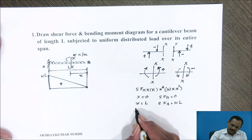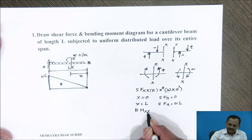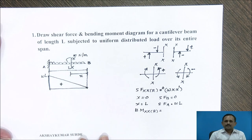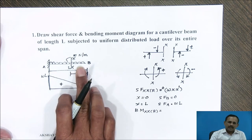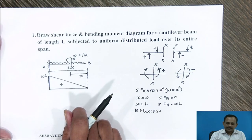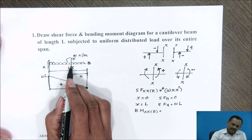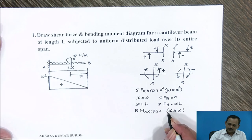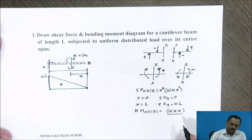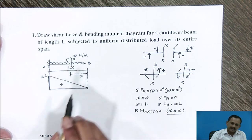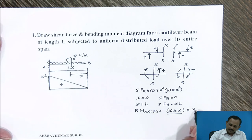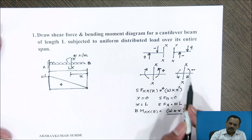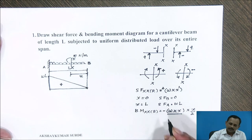For bending moment calculation, bending moment at section XX referring the right side of the section. Bending moment is the resultant of the moment due to the forces and reaction acting to the right side of the section. The total force acting to the right side of the section is rate of load W spread over distance X. This total load acts as a point load from section XX at a distance X by 2. The moment to the right side of the section acts in the clockwise direction, which according to the sign convention is considered to be negative.